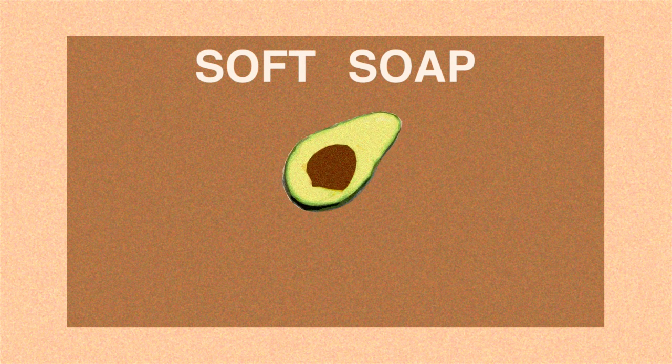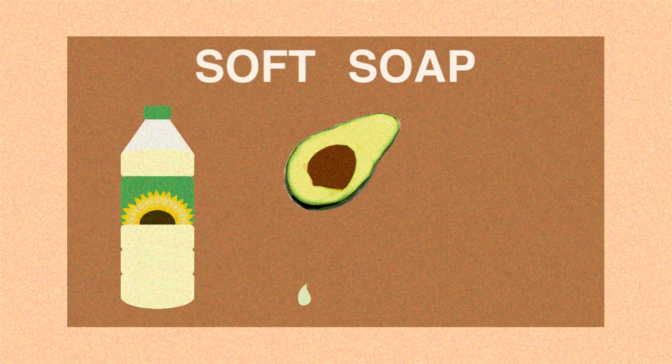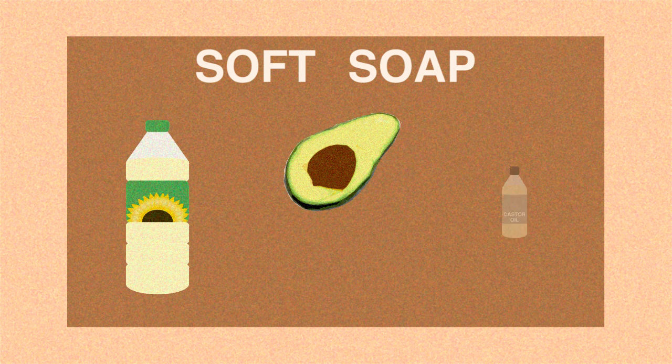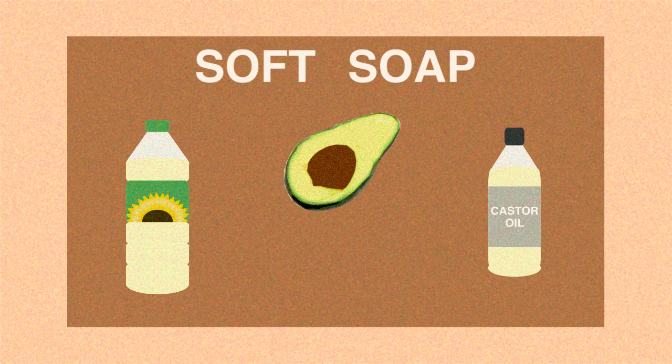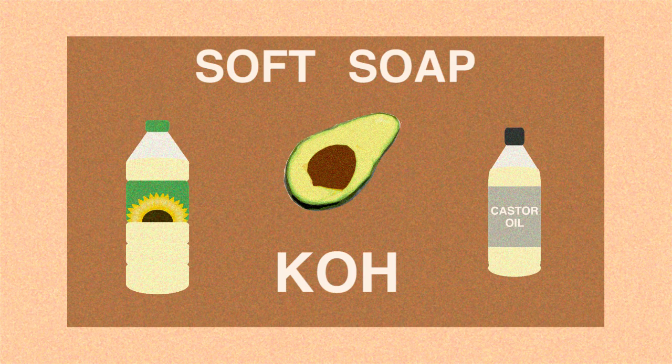Soft soaps use fatty acid esters like avocado oil, sunflower oil, and castor oil, to name a few, and are reacted with potassium hydroxide when saponified.